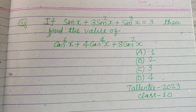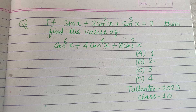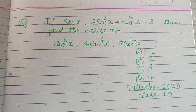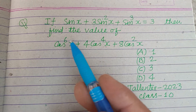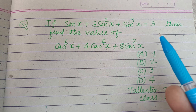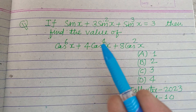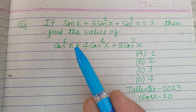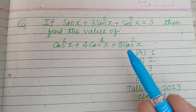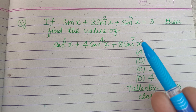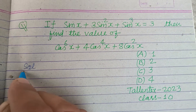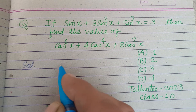Hello viewers, warm welcome to this YouTube channel. This question is from Talent X 2023. If sin x + 3sin²x + sin³x = 3, then find the value of cos⁶x + 4cos⁴x + 8cos²x.